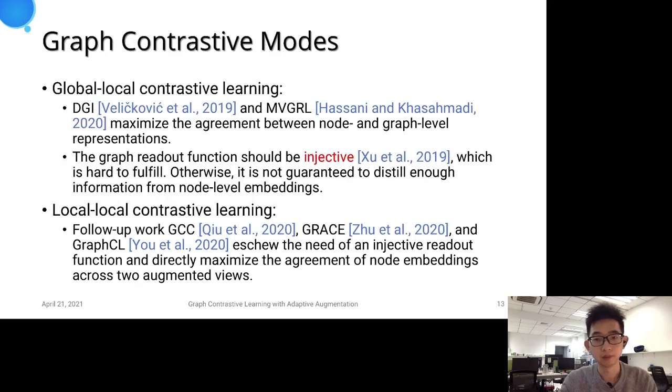Mainstream work involves two modes: global-to-local and local-to-local contrastive learning. Global-local contrastive learning, for example, DGI and MVGRL, maximize the agreement between node and graph-level representations.